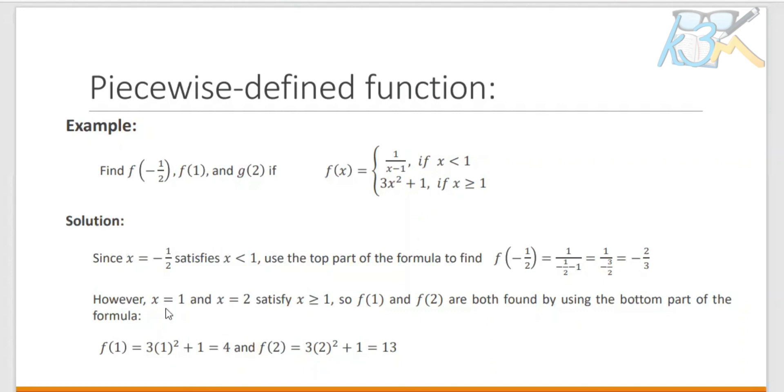However, x equals 1 and 2 satisfy x is greater than or equal to 1. So f of 1 and f of 2 are both found using the bottom part of the formula, which is f of x equals 3x squared plus 1. We substitute 1, so we get 3 times 1 squared plus 1, which equals 4. And for f of 2, we get 3 times 2 squared plus 1. So 2 squared is 4, so 4 times 3 is 12 plus 1, which is 13.